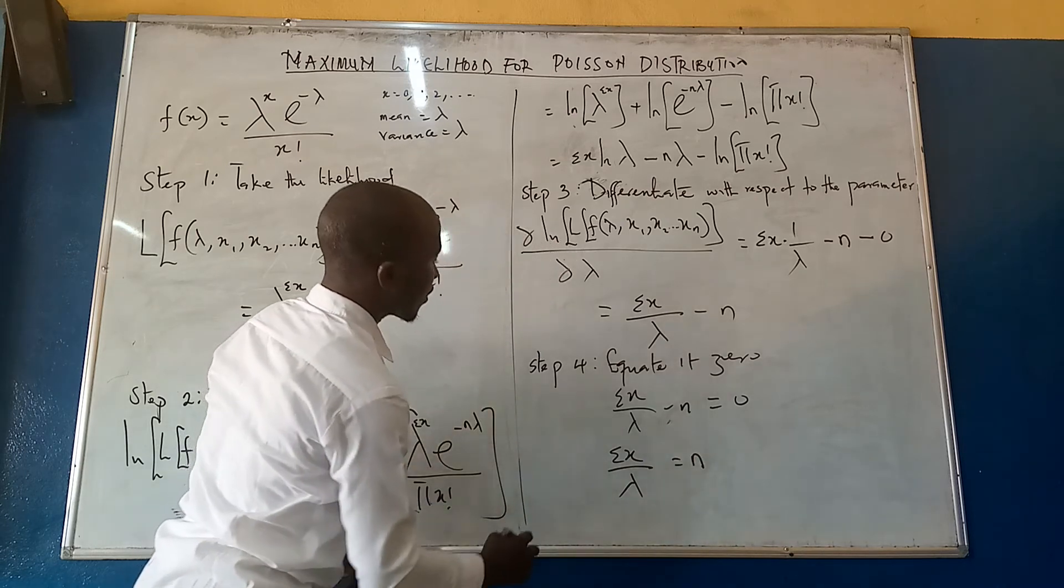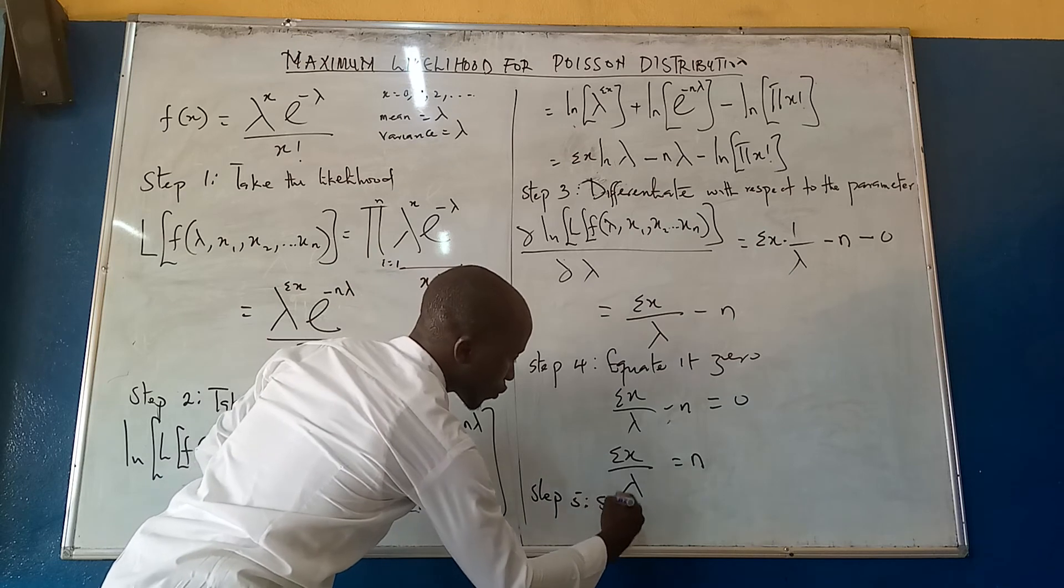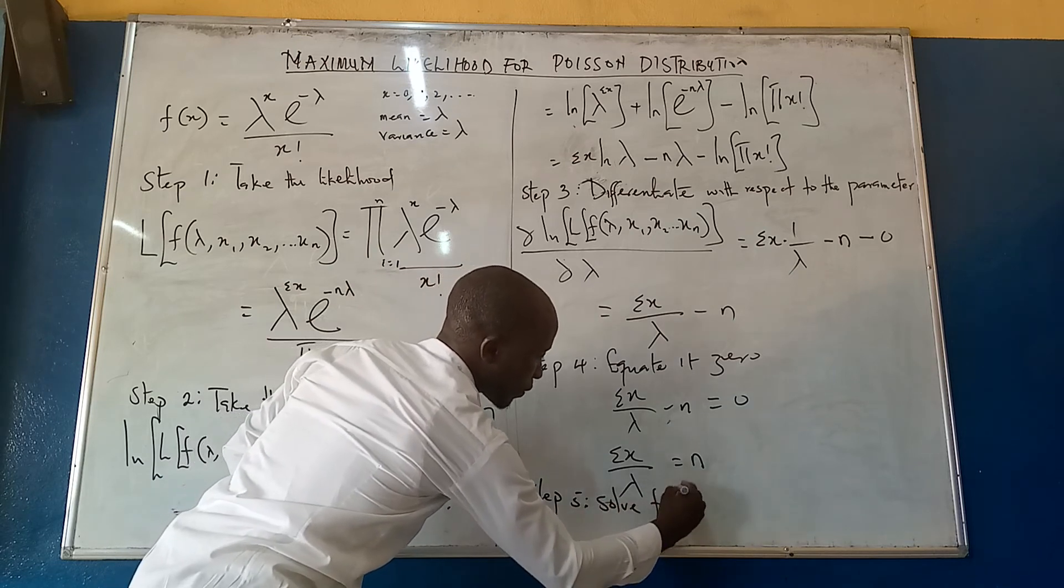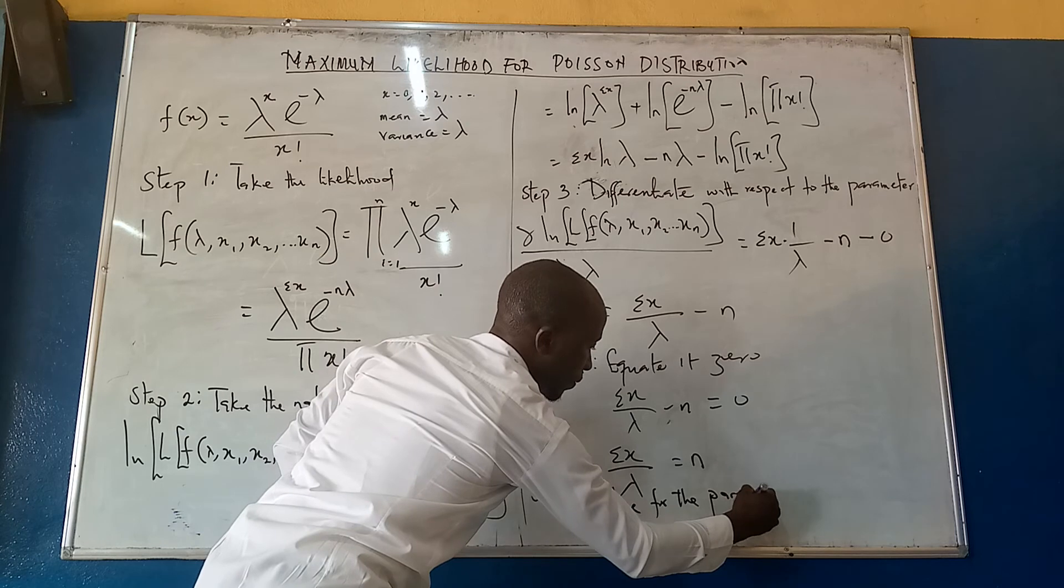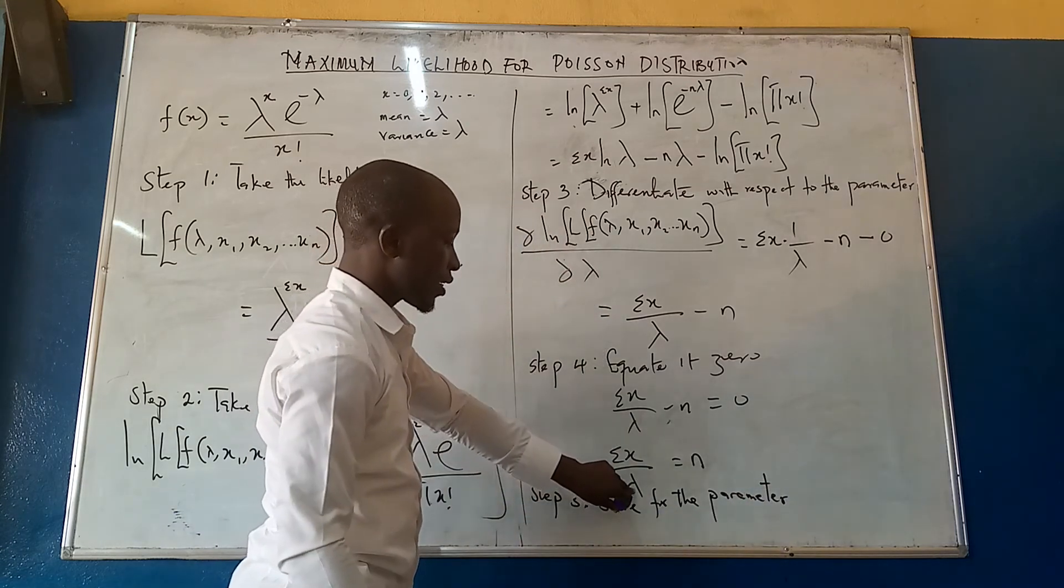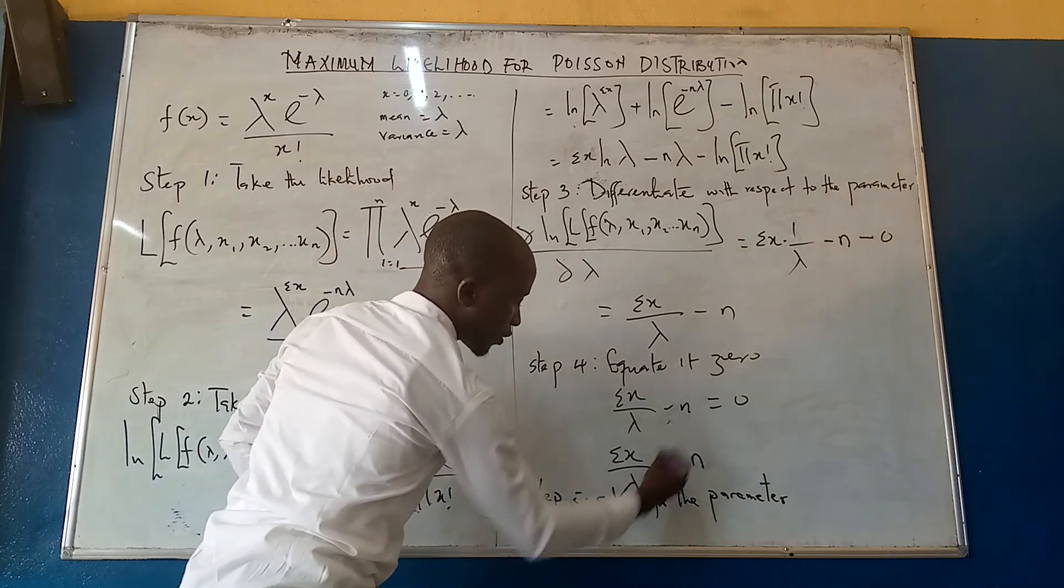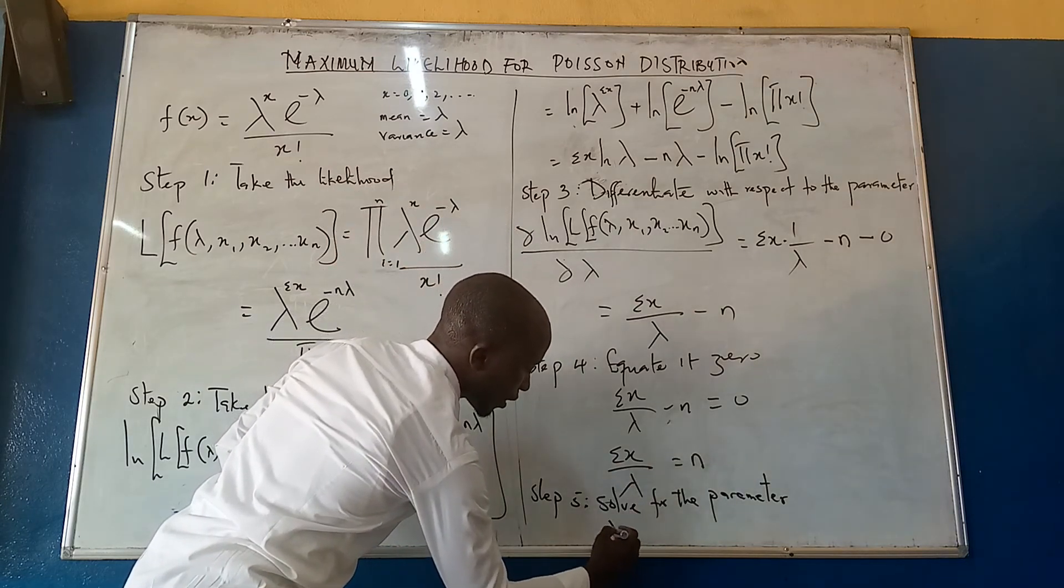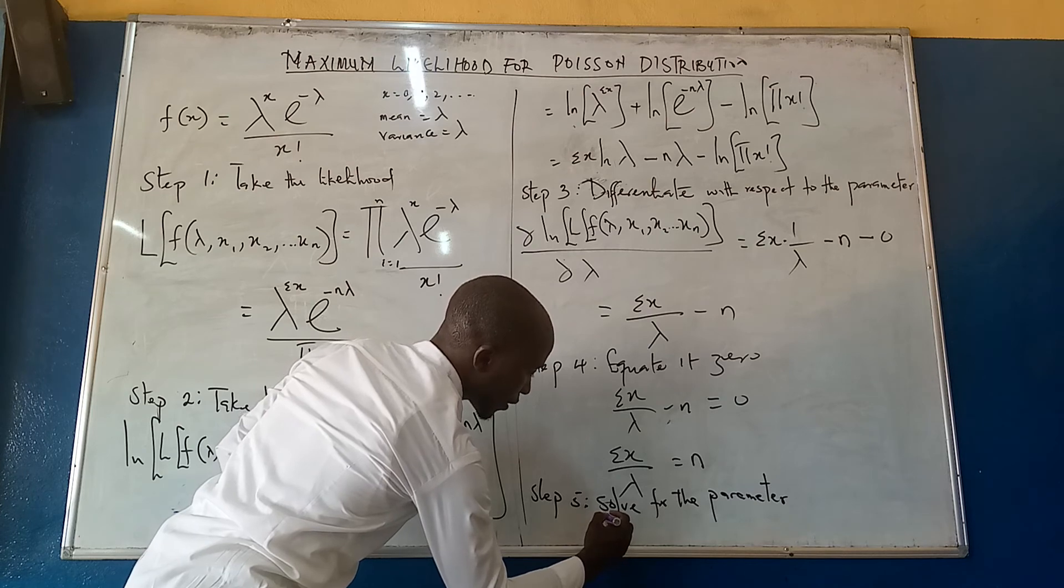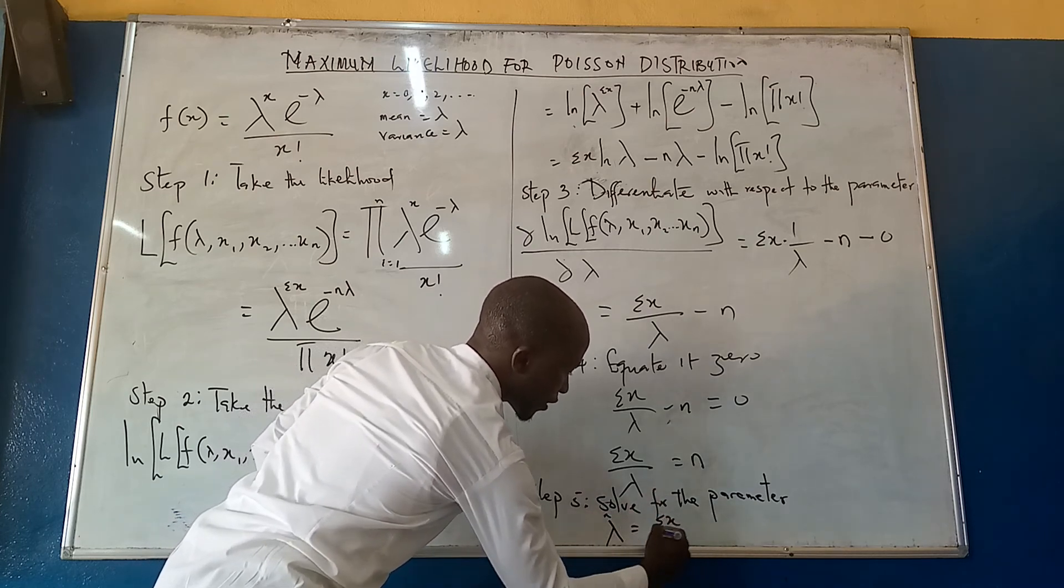And the final step, which is step 5, solve for the parameter. By the time we solve for the parameter, we just need lambda to be the subject. And by the time we make it the subject, we are going to have